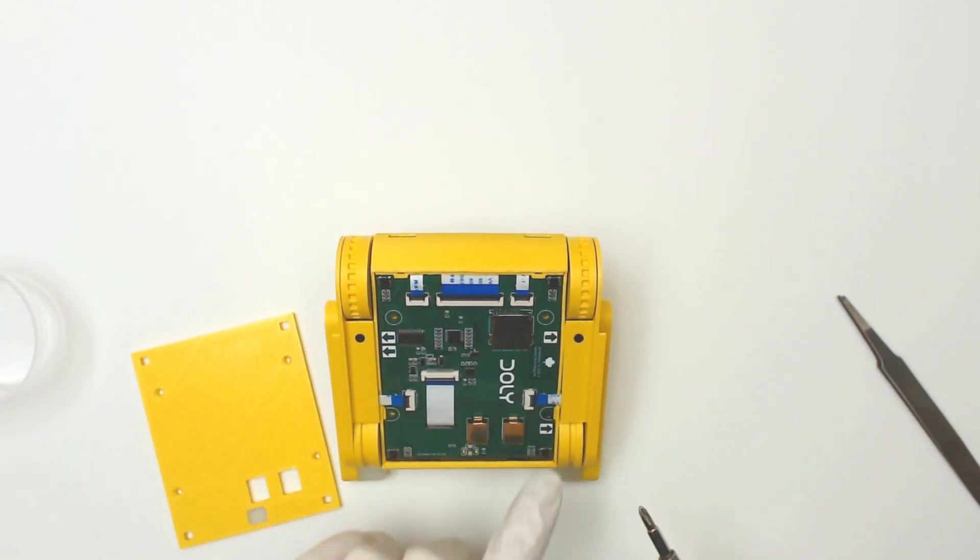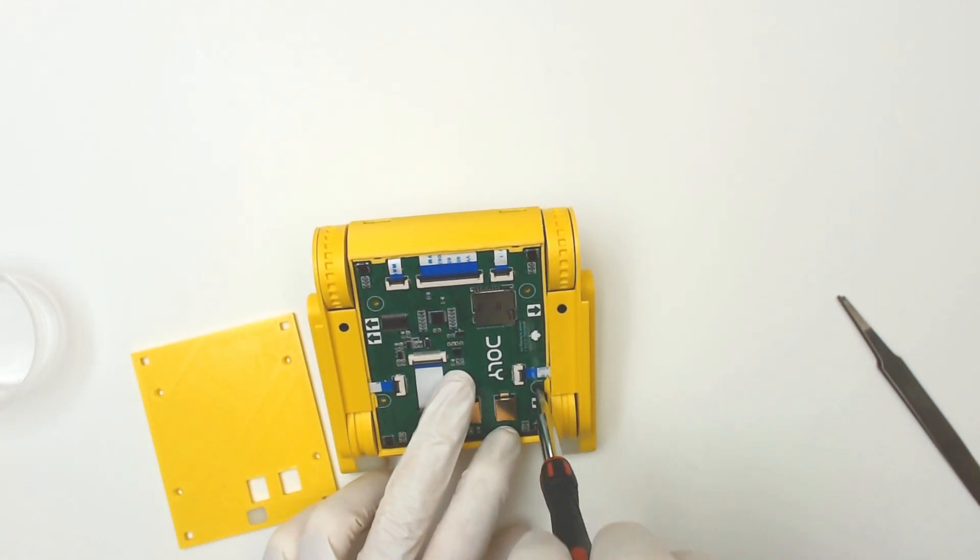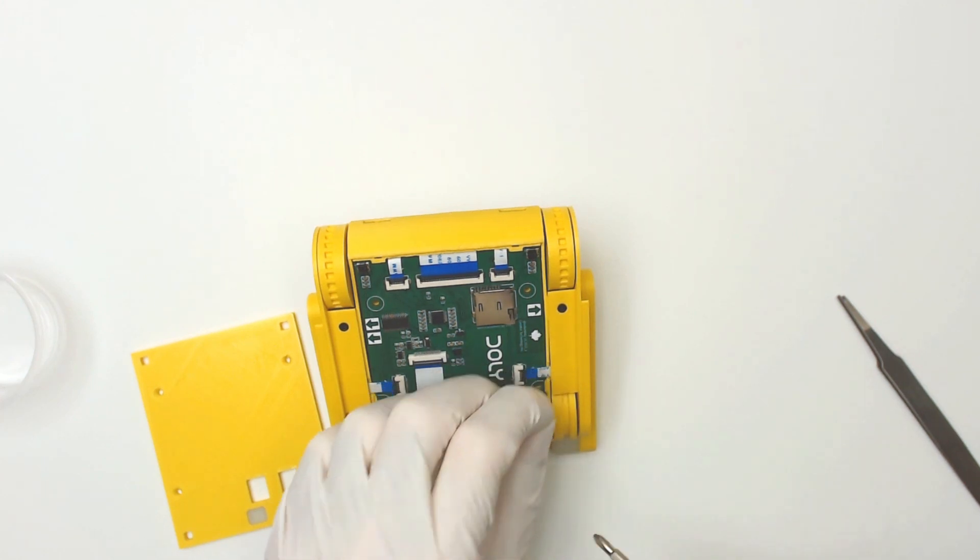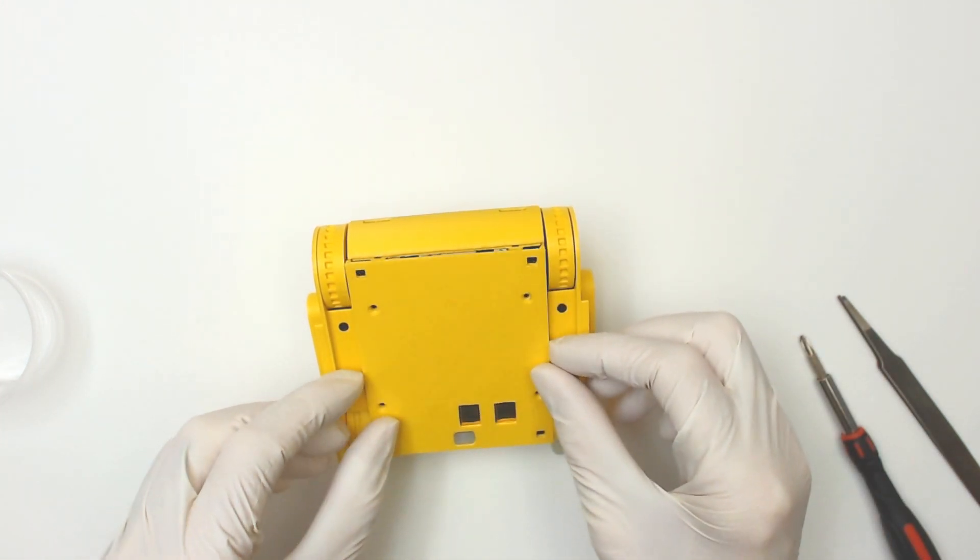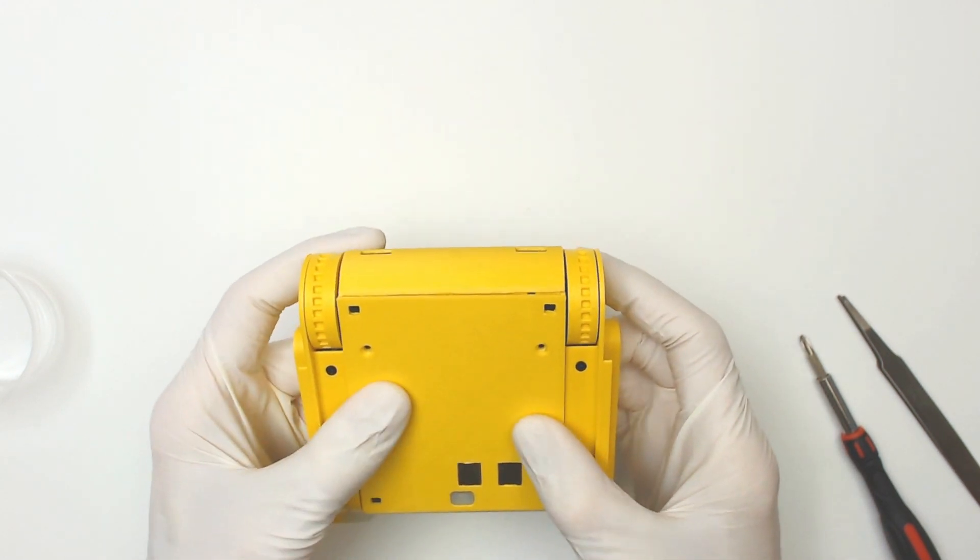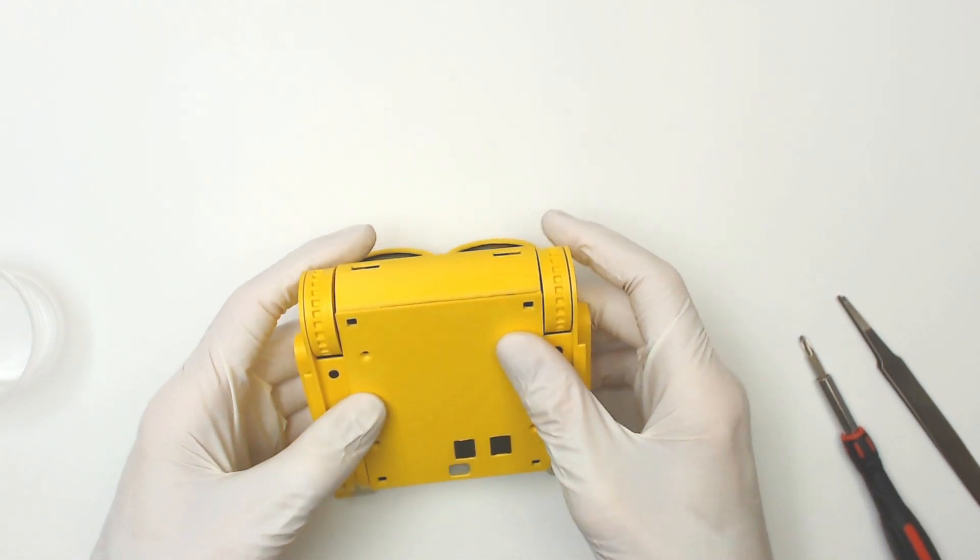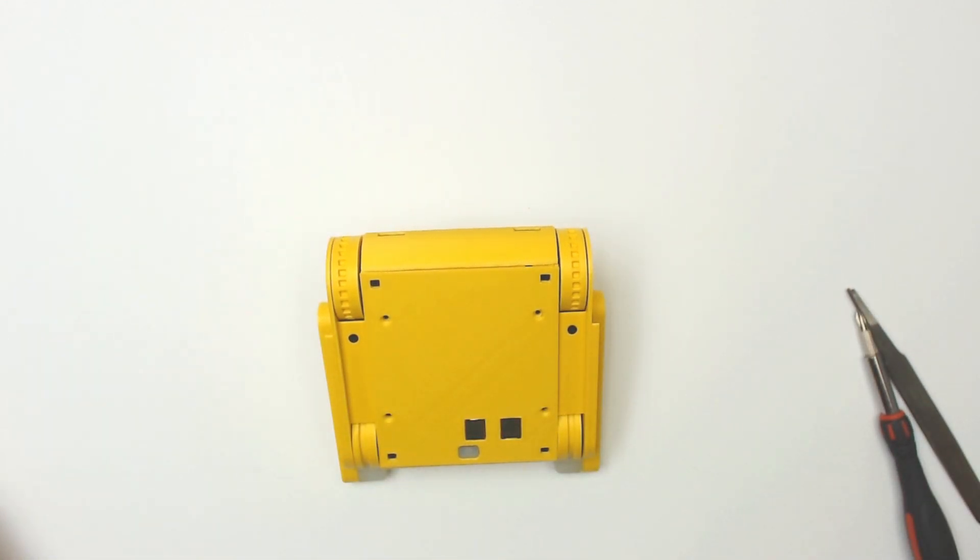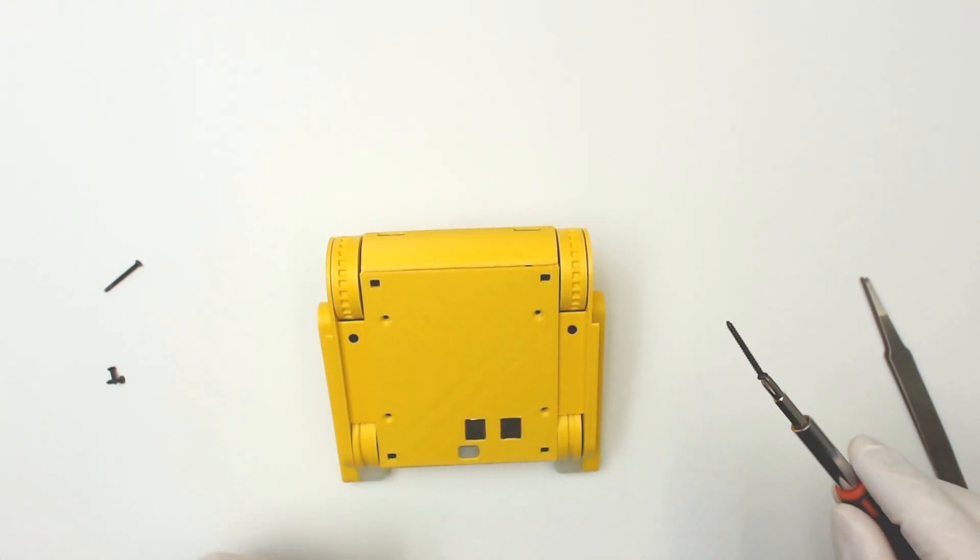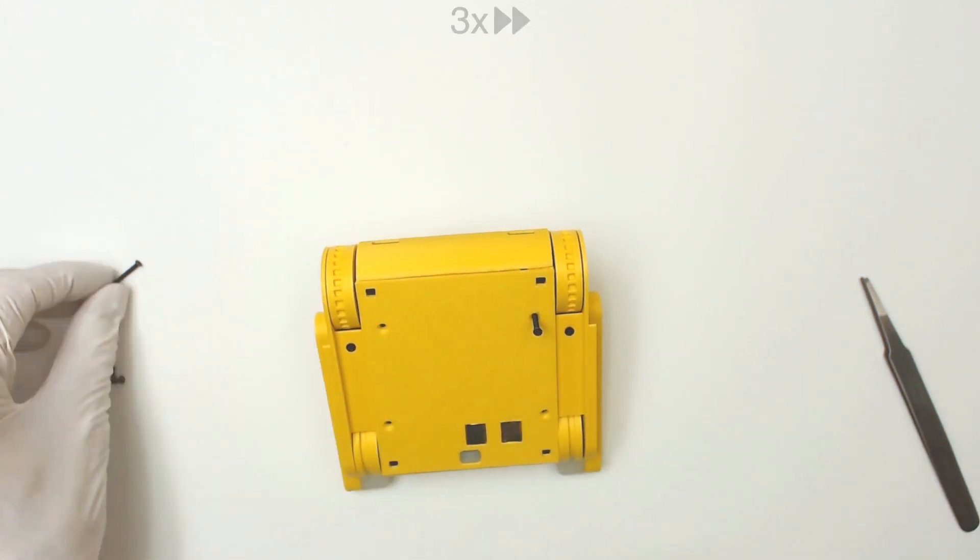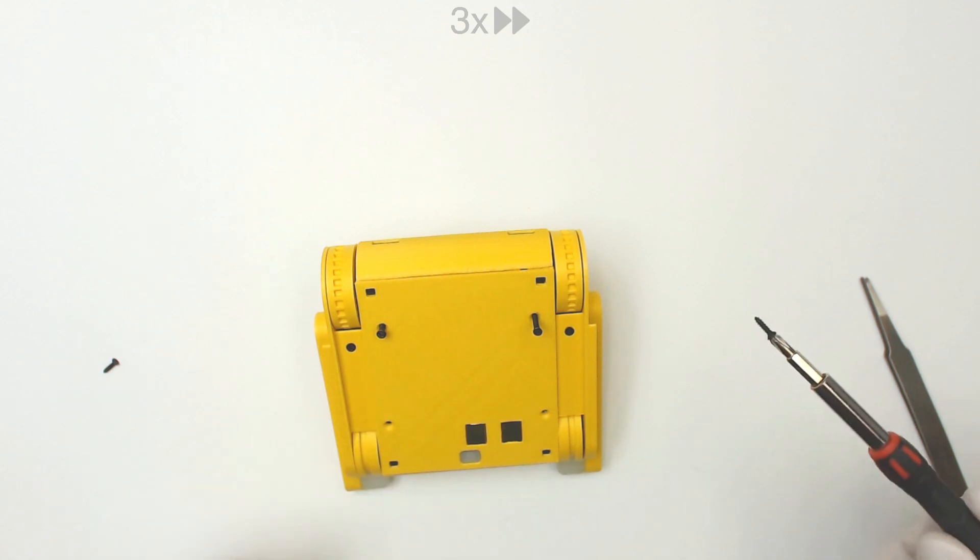Before mounting the lid, make sure that you remove the temporary screw. Secure the lid with four screws: two 20mm screws for the front and two 10mm screws for the rear.